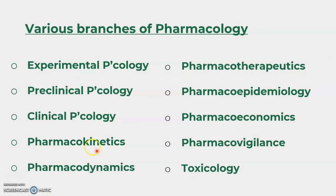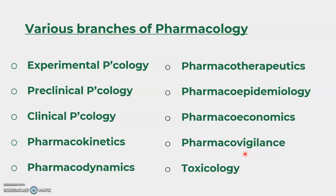Now let us discuss the different branches of pharmacology. There are a total of ten branches: experimental pharmacology, pre-clinical pharmacology, clinical pharmacology, pharmacokinetics, pharmacodynamics, pharmacotherapeutics, pharmacoepidemiology, pharmacoeconomics, pharmacovigilance, and toxicology. Please write these in your notebook. These are all very important branches.